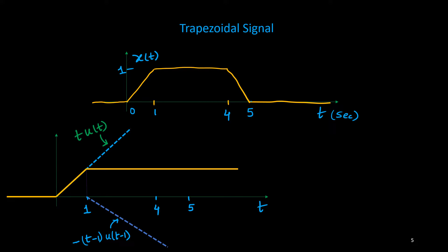So I need to put another ramp signal here, downward ramp. So I will consider this one, it's delayed by 4 seconds, so we write minus (t-4)·u(t-4).